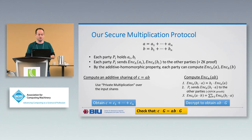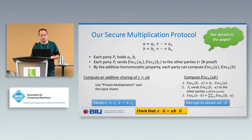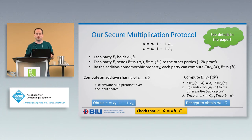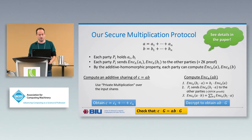There are additional details: we need to ensure nothing is leaked from whether a party accepts or aborts, so there are some additional steps. But this is the main idea. This protocol is a general MPC protocol to multiply two shared values — it works similarly to many known MPC protocols. The main difference is that instead of using MACs over additive shares as in state-of-the-art protocols, we use El-Gamal encryption as a commitment for the inputs.